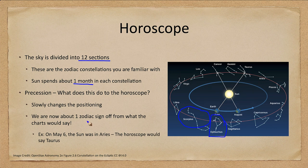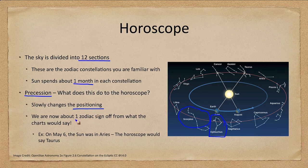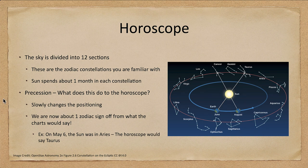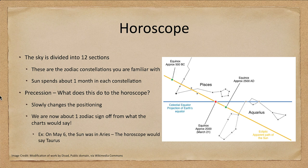We also discussed Hipparchus and precession, which is constantly changing the coordinate system and shifting when the Sun passes through each constellation. We are now one zodiac sign off from what a standard horoscope chart would say. For example, on May 6th the Sun would actually be in Aries, but a standard horoscope would say that someone born on May 6th is a Taurus. Because of precession and the time since these original horoscopes were developed, we are now off by one full constellation, and that will continue to shift further as precession continues.